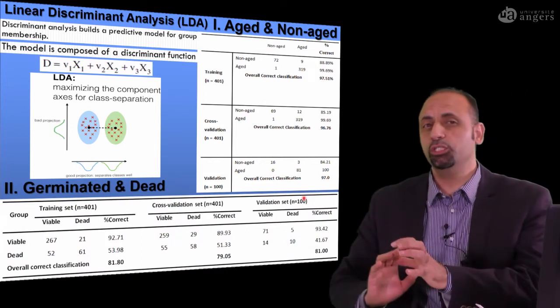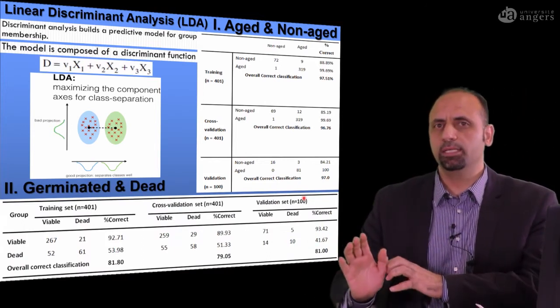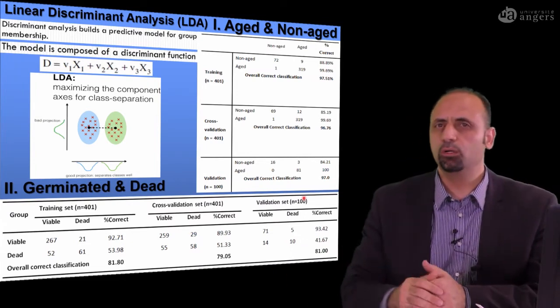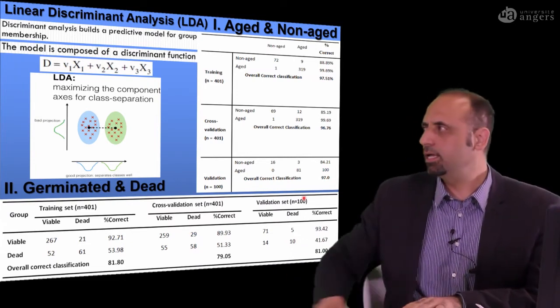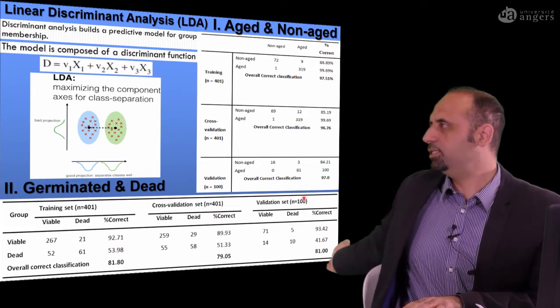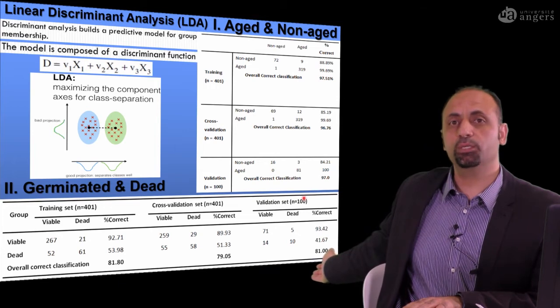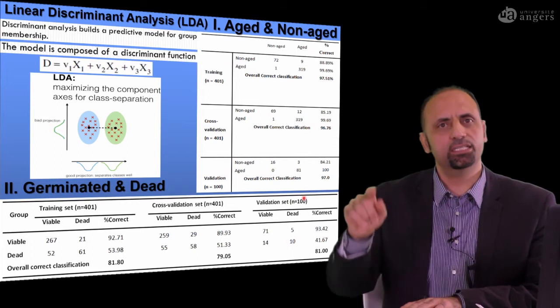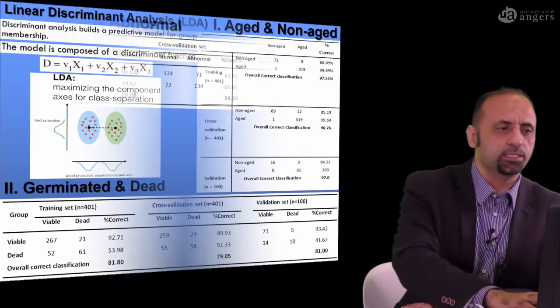To differentiate between germinated or non-germinated, it is a viable seed that can germinate or dead seed. As you see, the accuracy is reasonable. In validation set, it's 81% correct classification based only on the spectral data we extracted from the original seeds.